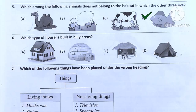Question number 6. Which type of house is built in hilly areas? Option A: Pakka house. Option B: Igloo. Option C: Kaccha house. Option D: Tent. So the answer will be Option A — Pakka house.